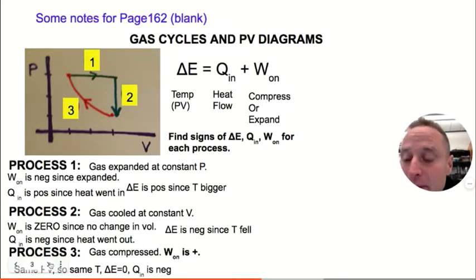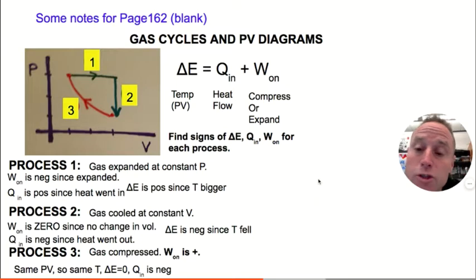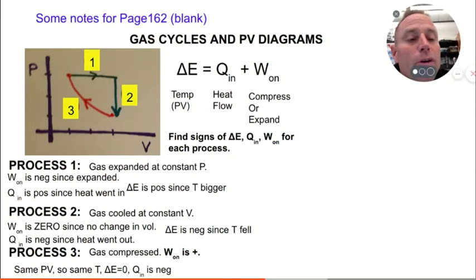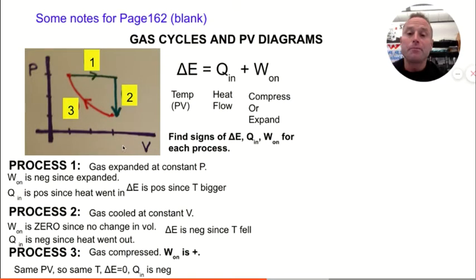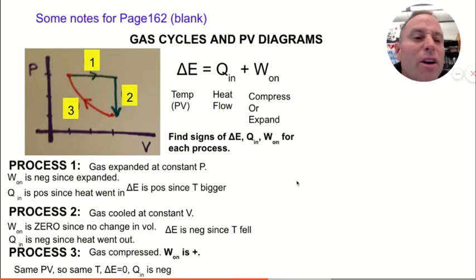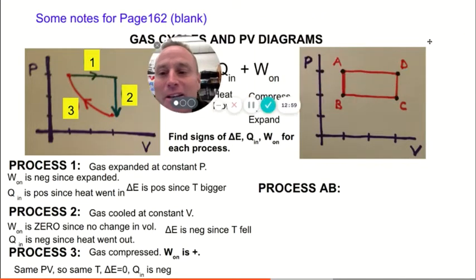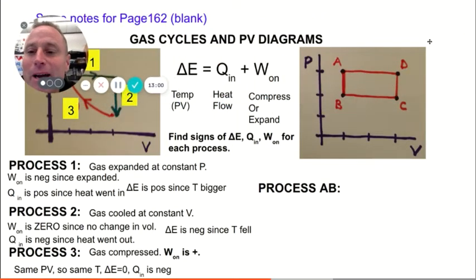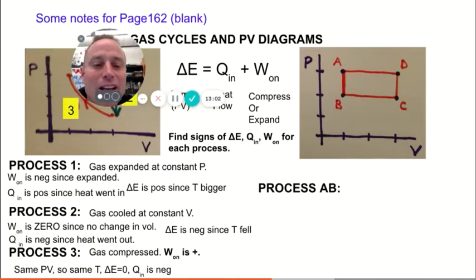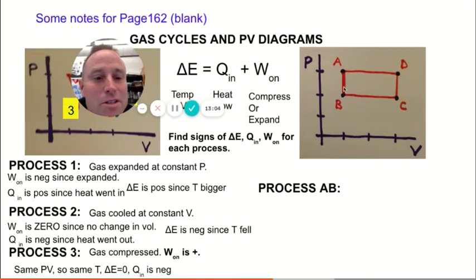The product of pressure and volume is the same at both ends of process three, so the temperature is the same. That's how you read gas cycles. Now here's another gas cycle for you to work through, where the gas goes A, B, C, D, back to A.